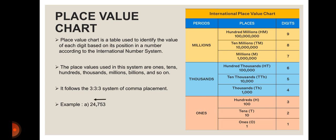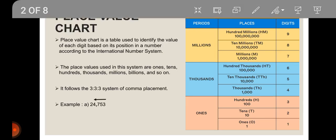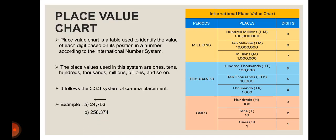Let's take a second example: 258,374. Reading from right to left, four is in ones, seven in tens, and three in hundreds — these three form the ones period, so we place a comma. Then eight, five, and two belong to the thousands period.